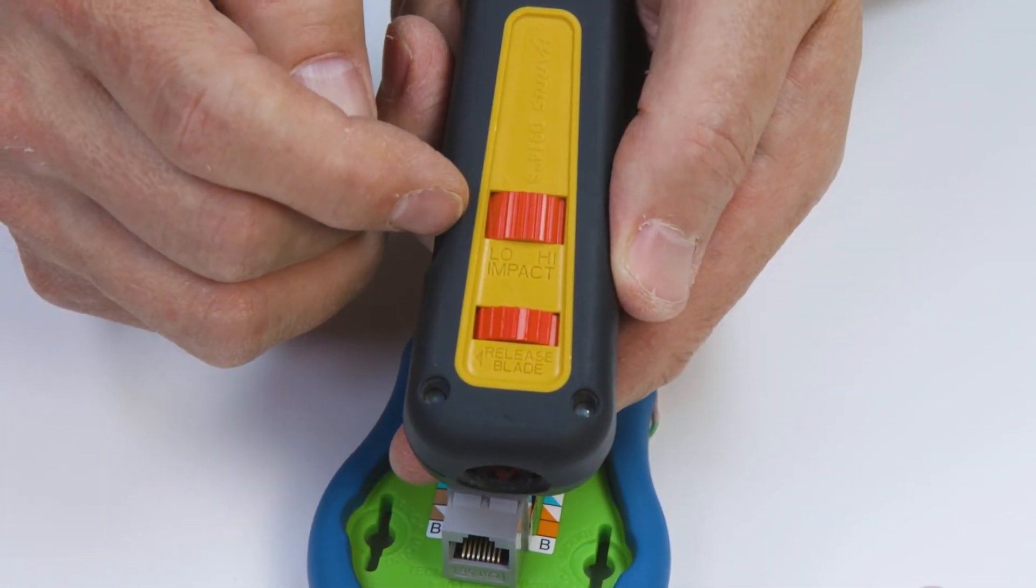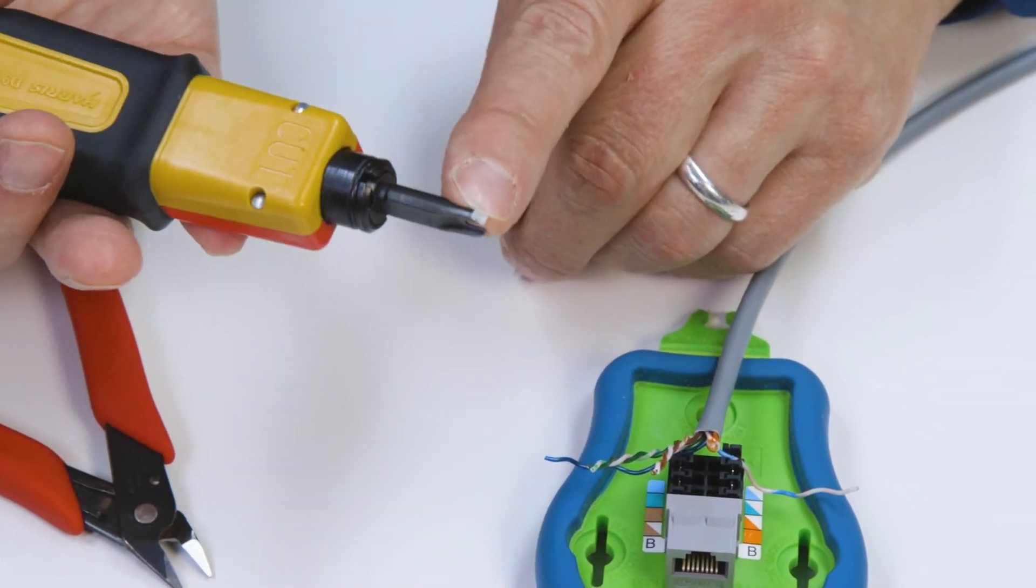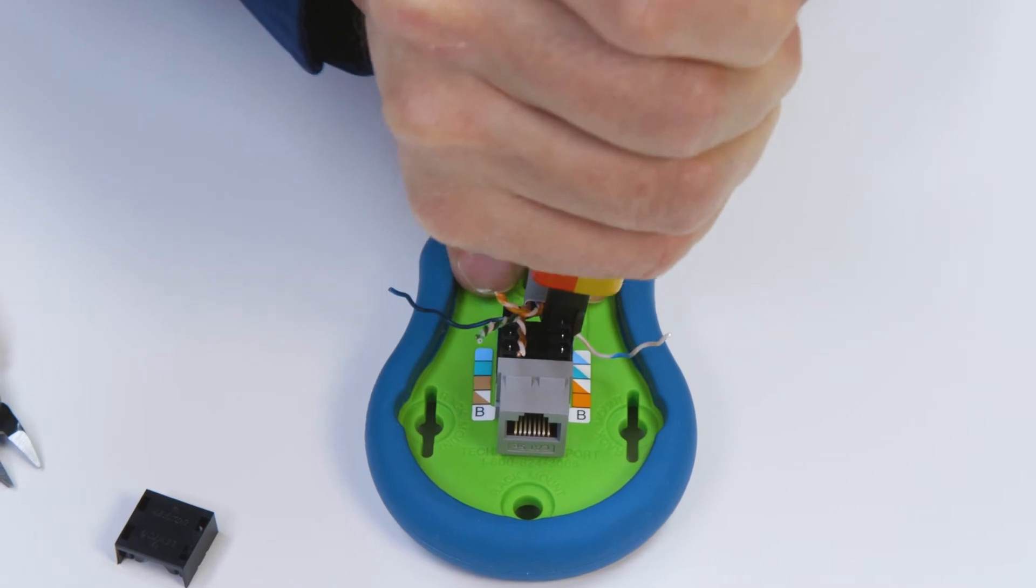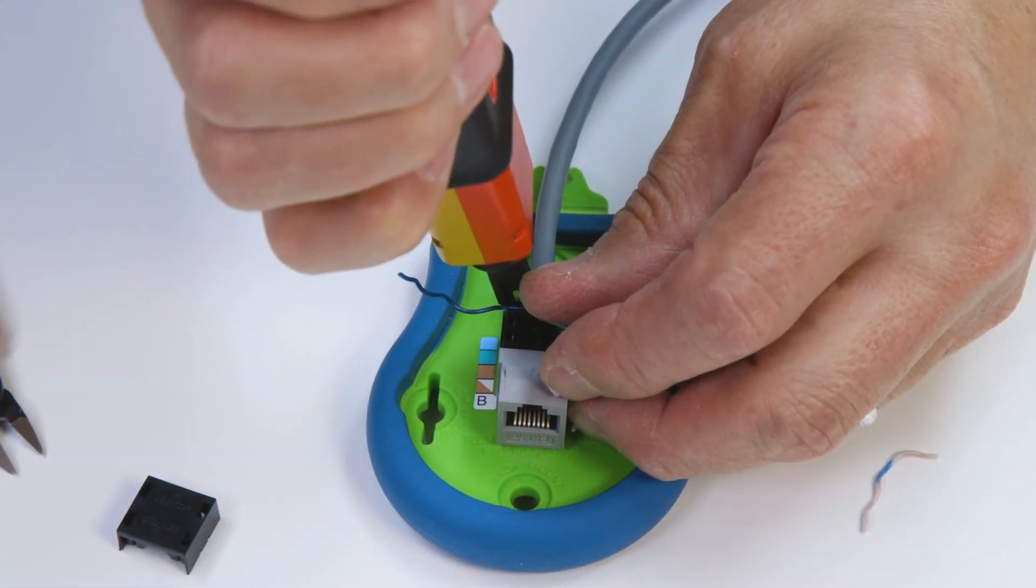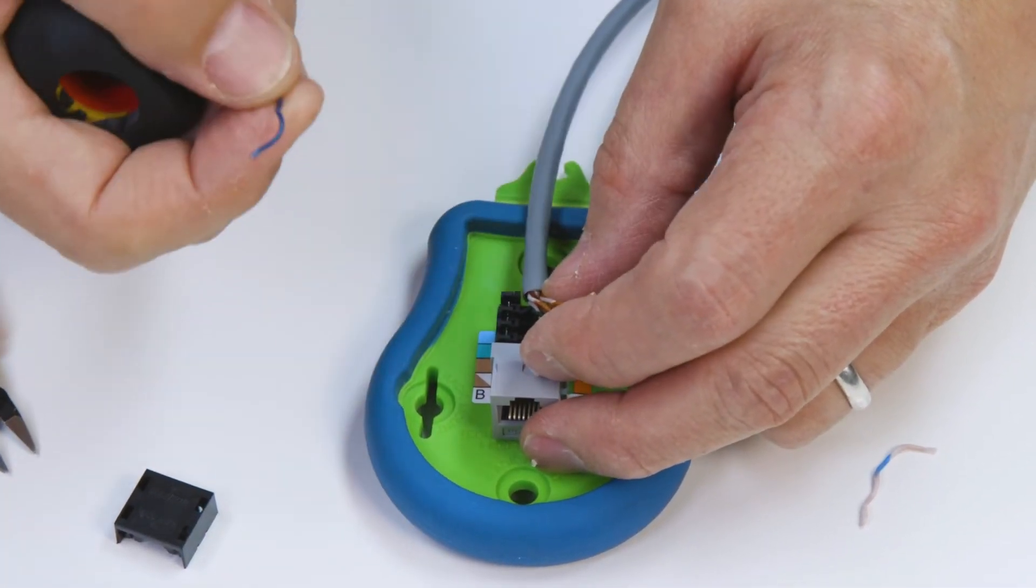Ensure your punch tool is set to low impact. Then with the yellow side facing out, punch down to terminate the wire on either side of the jack. To ensure a clean cut, slightly angle the punch down tool, allowing the blade to interface with the jack's cutting ledge.